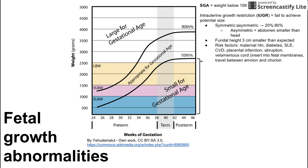There are several risk factors for intrauterine growth restriction. These include maternal hypertension, diabetes, lupus, cardiovascular disease, placental infarction, placental abruption, and velamentous cord — which means that the cord, instead of inserting into the middle of the placenta, inserts into the fetal membranes and then travels between the amnion and the chorion.